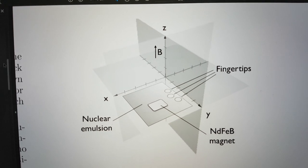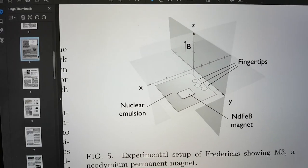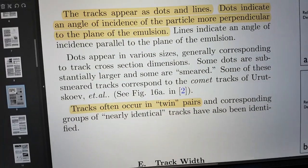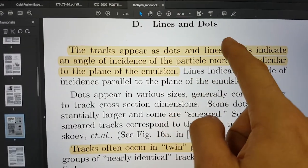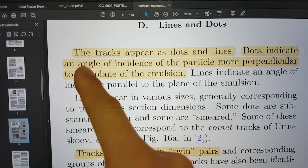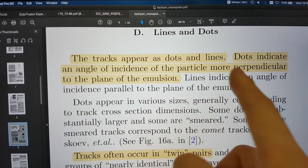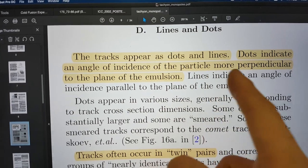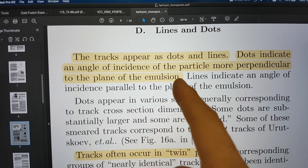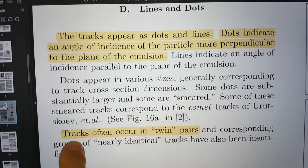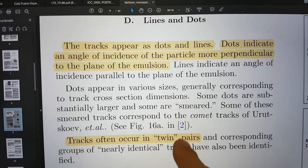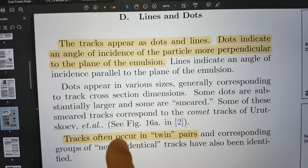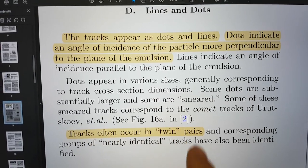Anyway, using this, he actually says down here that he has lines and dots. We've all seen the kind of line tracks. He says the tracks appear as dots and lines. Dots indicate an angle of incidence of the particle more perpendicular to the plane of emulsion. And then he says tracks often occur in twin pairs, i.e. there are two types of tracks. There are dots and lines and tracks often occur in twin pairs.